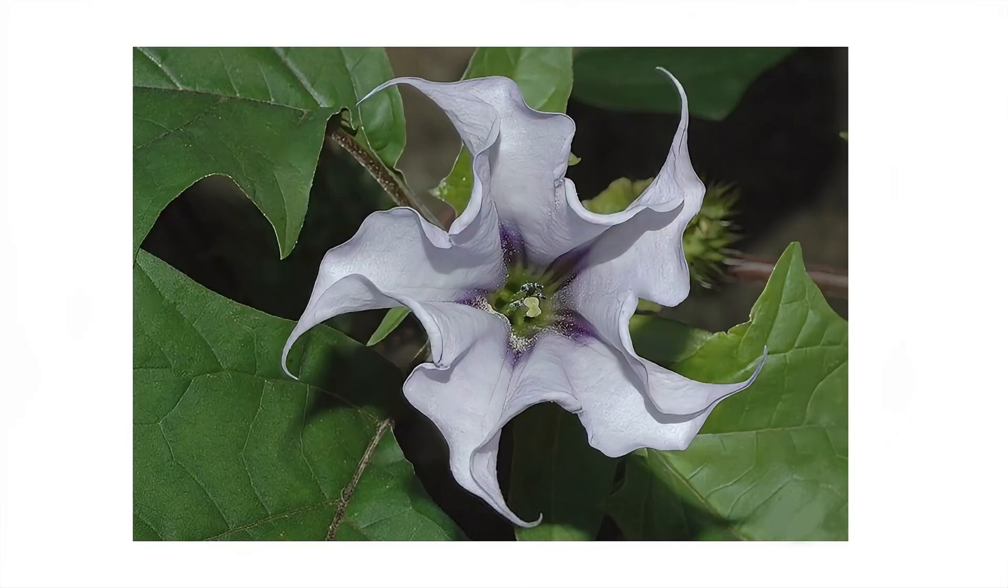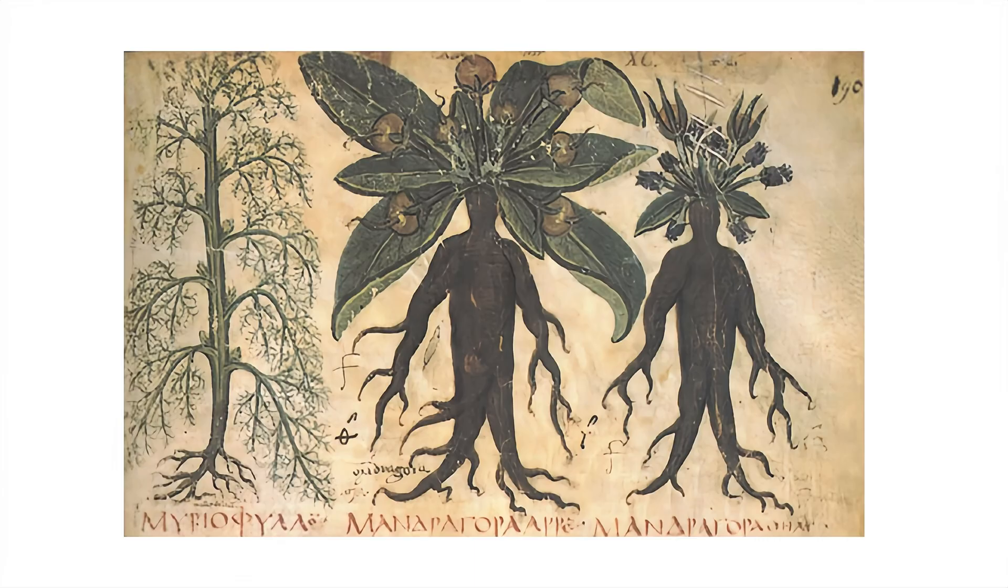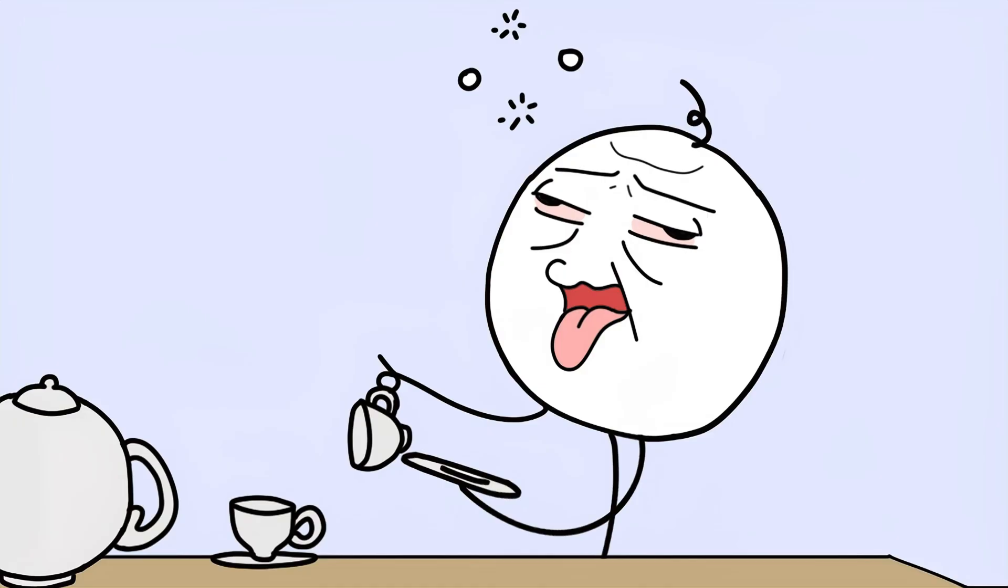Datura stramonium, also known as jimson weed, or the witch's herb, appears in numerous ancient legends and rites. In medieval Europe, witches were said to use plants from the nightshade family like datura and mandrake to concoct flying ointments smeared on broomsticks to fly at sabbaths, really a way to induce trance and visions.